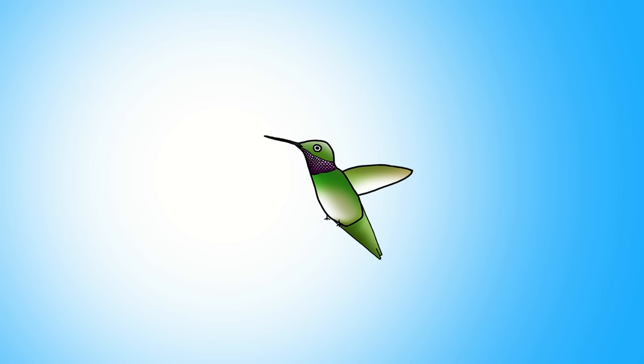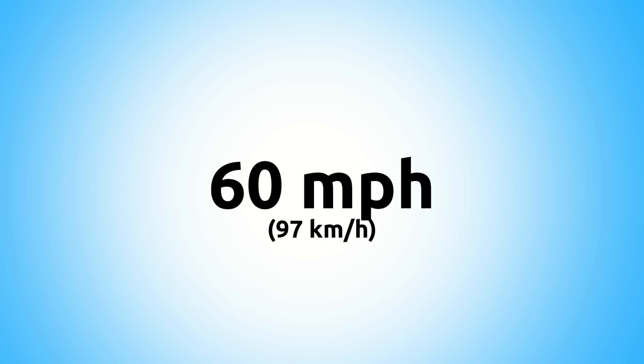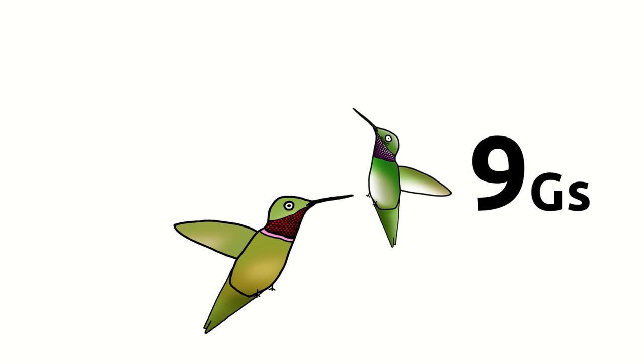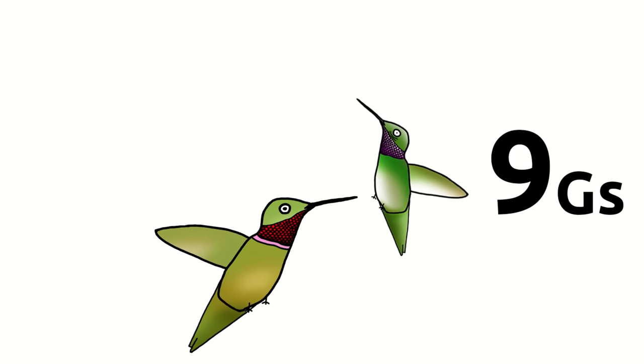He flies 150 feet in the air, aligns perfectly with the shine of the sun, and then drops down at a mind-boggling 60 miles per hour. And right before he slams into her, he stops with a force of 9 Gs, more than enough to kill a human being.